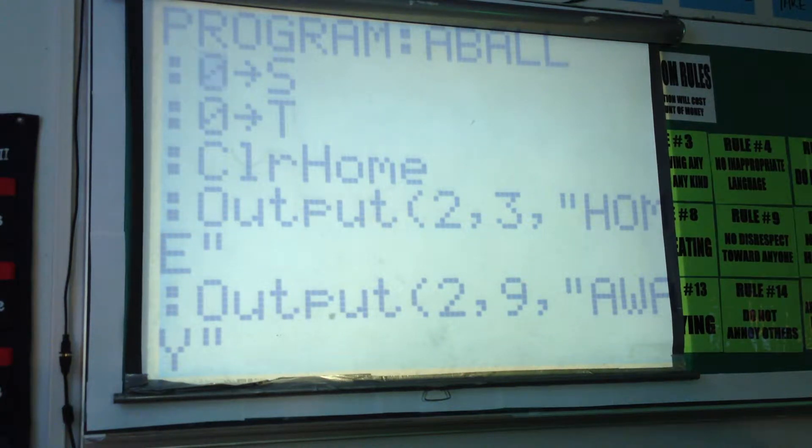This is the code for the homework assignment from 11-19 Monday. We start off by clearing out S and T with zeros. S and T will be the scores for home and away, respectively.